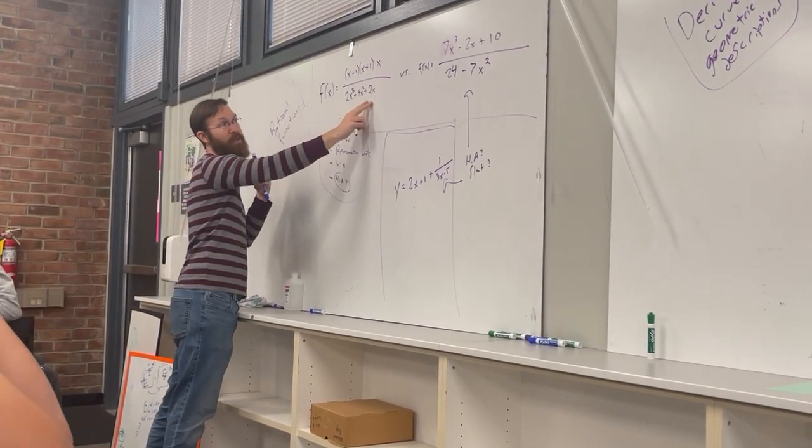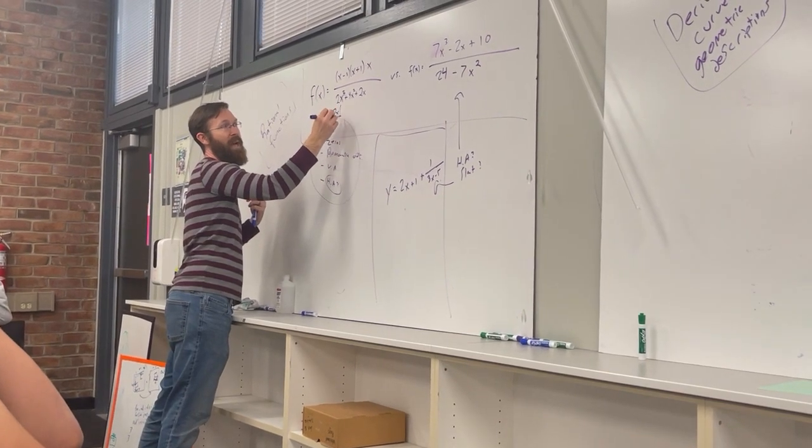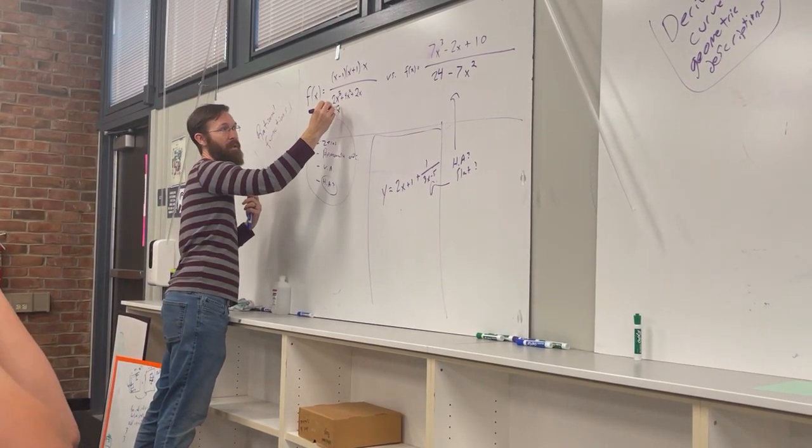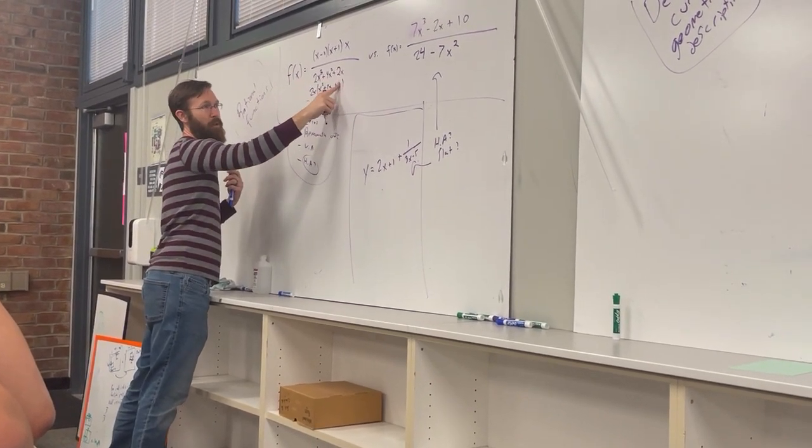So let's factor the denominator. So I'm seeing a 2x common to all three of these terms. So we'll write 2x, and now this becomes x squared, and this is 2x, and this is 2. No, it's 1.